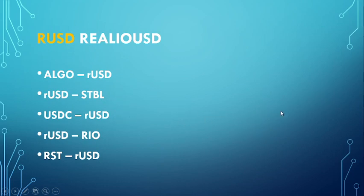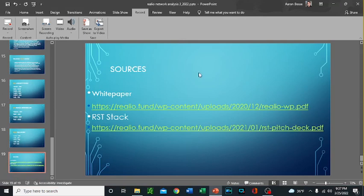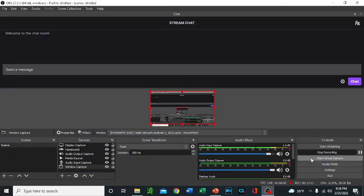Just to give you guys an idea of what you need to be thinking about when looking at these tokens and their intended uses — the sources are available from the white paper and the RST stack referenced throughout. I hope this was informative. Please leave a like and share if you found this valuable. The Realio network is a great platform and project on the Algorand ecosystem that I am looking at and following, along with other projects like Lofty. Thanks guys, have a great night and we'll see you next time.